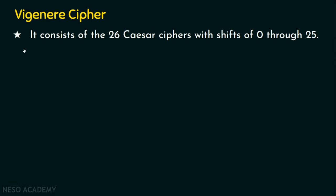What is the Vigenère cipher? This Vigenère cipher consists of 26 Caesar ciphers with shifts 0 through 25. We have seen the Caesar cipher where the key is fixed — the key is equal to 3 — and the shift between plaintext and ciphertext letters is always 3. Whereas in the Vigenère cipher, we are going to use 26 Caesar ciphers with shifts 0 through 25. When we see an example, you will understand this clearly.